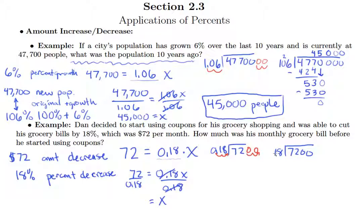And 18 goes into 72, well, 20 goes into 72 only 3 times, but 18 is less than 20. So you might try 4, and it turns out 4 goes into 18, or sorry, 4 times 18 is exactly 72. So get a remainder of 0, put 0s over the remaining 2 places. So x is equal to $400 that he was originally spending on food each month.